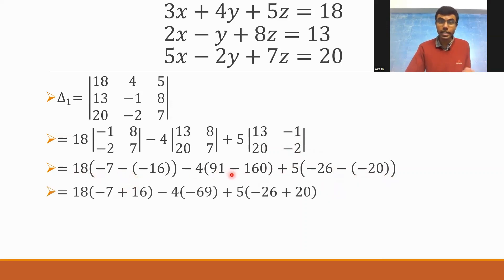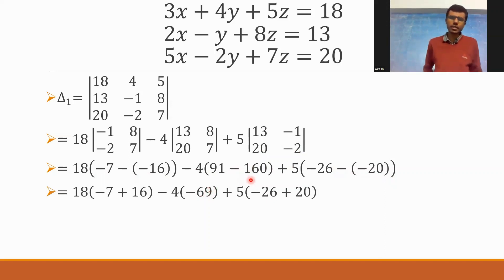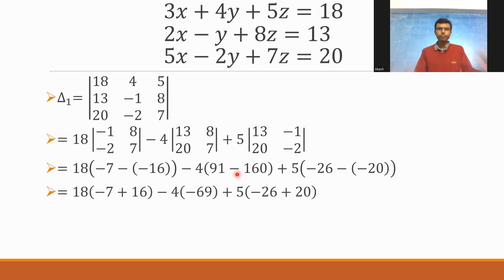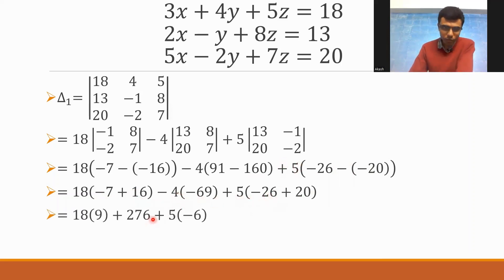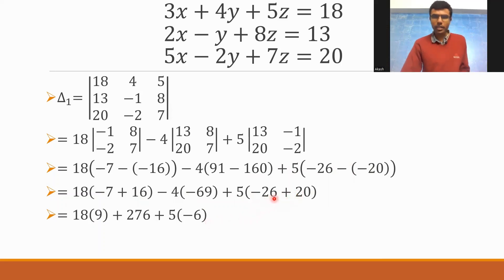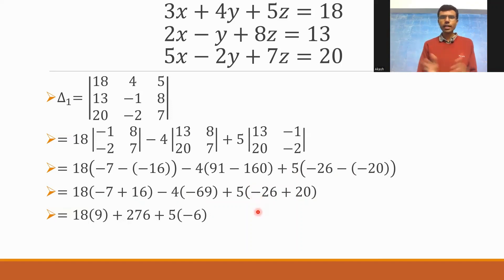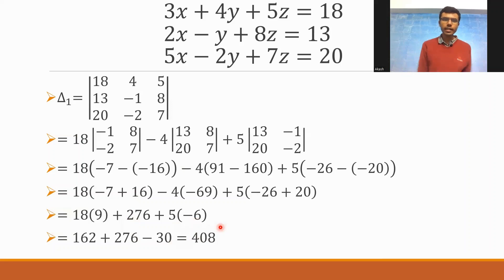Simplifying: -7 + 16 is 9, so 18×9 is 162. For 91 minus 160, 160 is bigger and has a minus sign, so the result is -69, and minus 4×(-69) is +276. And -26 + 20 is -6, so 5×(-6) is -30. Thus delta 1 = 162 + 276 - 30 = 408.